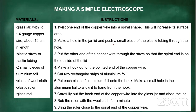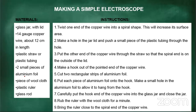You can make your own electroscope at home. You will need: a glass jar with a lid, about 12 centimeters of copper wire, a plastic straw or plastic tubing, two small pieces of aluminum foil, a piece of wool cloth, a plastic ruler, and a glass rod.